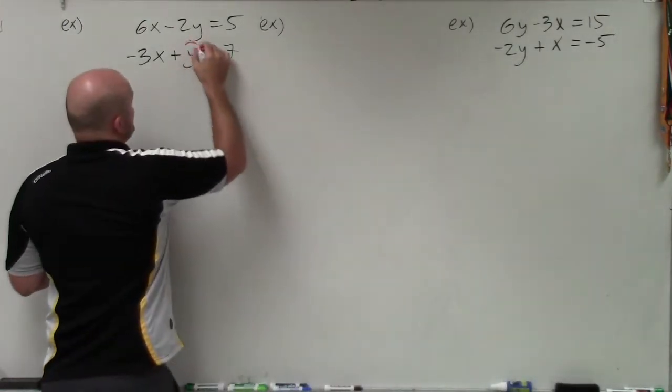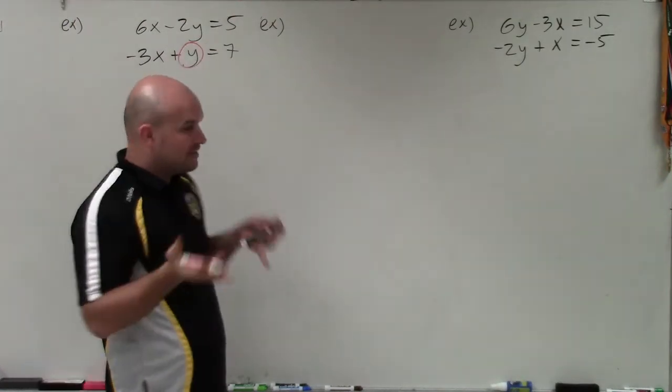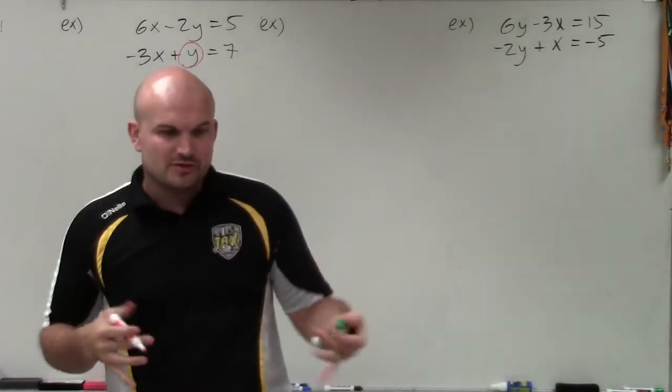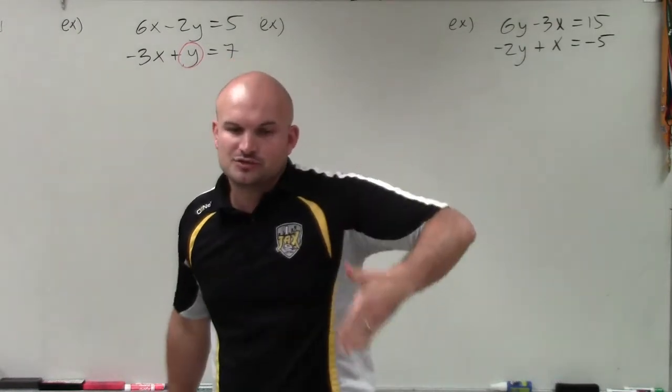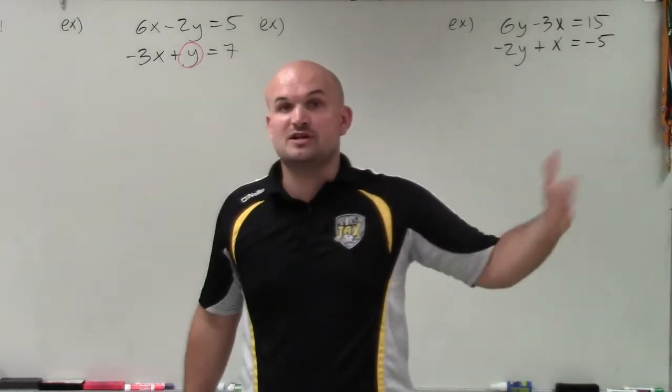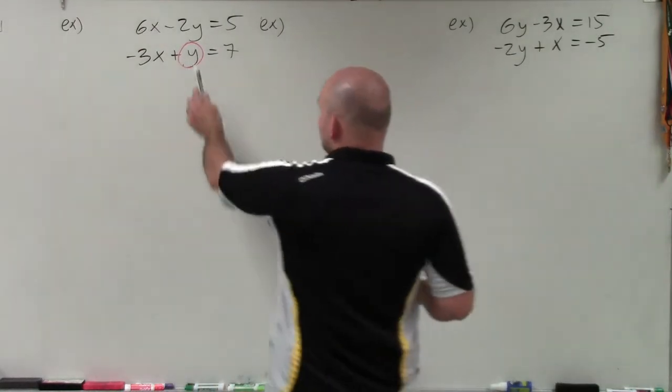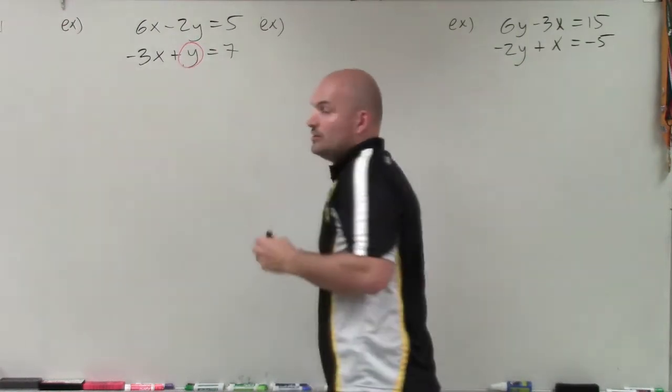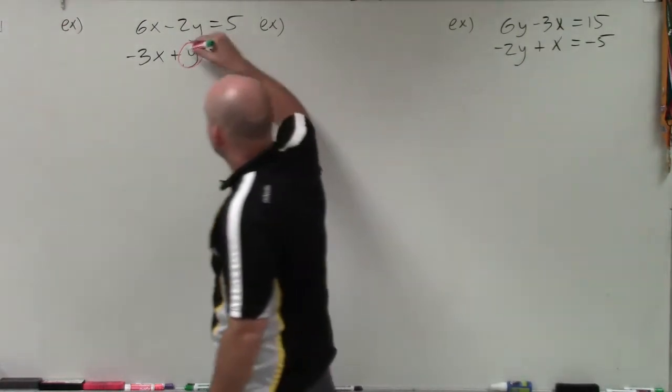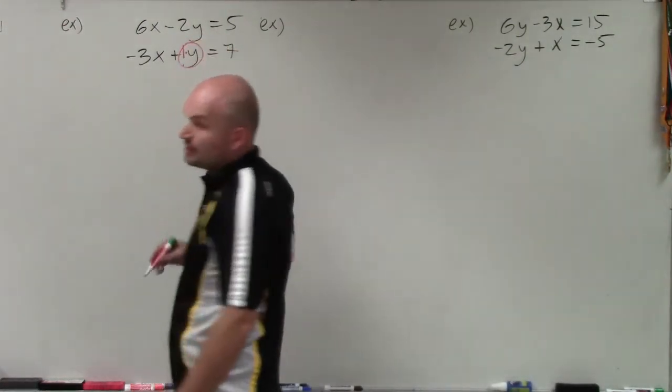One of the first things I want you to do is to identify the variable that you're going to solve for. The equations I identified, remember, when you're determining substitution, you're choosing a variable that has a coefficient of 1 or negative 1. So you can see in this case, I have x, y, x, y. Well, this y is the only one that has a coefficient of 1. So therefore, that is going to be the variable that I'm going to solve for.